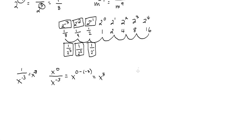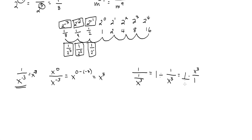There's a different way of looking at it too. I can rewrite x to the minus 3 as 1 over x to the third. So I've got 1 divided by 1 over x to the third. When you divide by a fraction, that's the same as multiplying by the reciprocal. Taking the reciprocal: 1 over 1 times x to the third over 1 gives us x to the third. So I've proven two different ways that 1 over x to the minus 3 is x to the third.